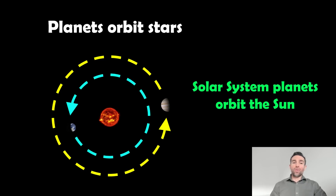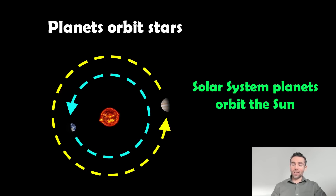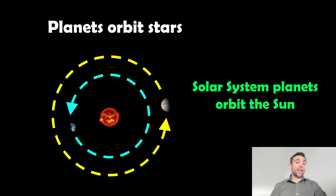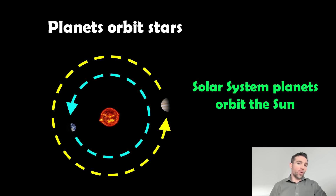Generally, planets orbit stars. In the solar system, all of our planets go around the Sun. The vast majority of extra-solar planets we find are orbiting stars. However, James Webb specifically has discovered lots of what we would classify as free-floating or rogue planets that don't have stars. So planets that don't orbit stars do exist, but they are in the minority. The vast majority of planets, we're making the assumption that they actually do orbit stars, a bit like our solar system.